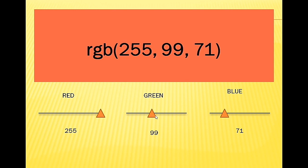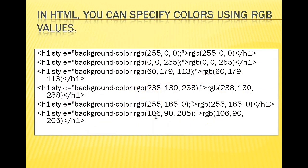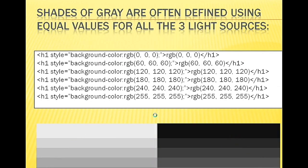You can adjust RGB colors - move the green slider, move others as well. There are many online tools available in the web browser where you can get RGB values. From those color paint tools, you can get the values and use them. In HTML, you can specify color using RGB values.